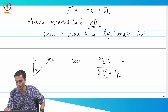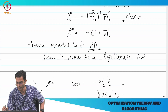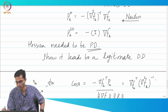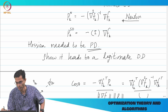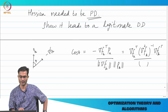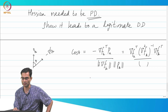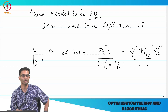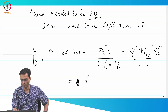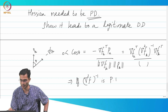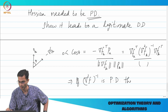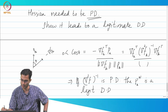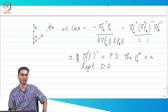Substituting the numerator using the Newton expression for p_k, we get grad f_k^T times the expression. This cosine needs to be greater than zero for a descent direction. Therefore, this expression has to be positive. You can see that if the inverse of the Hessian S_N is positive definite, then p_k^N is a legitimate descent direction. This is a stronger requirement.